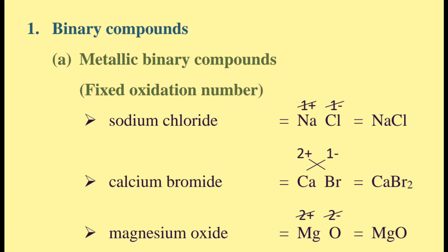Calcium bromide. Calcium is Ca with oxidation number 2 plus. Bromide is Br with oxidation number 1 minus.